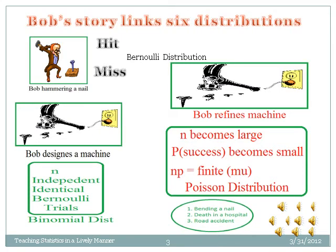In the case of the Poisson distribution, most of the time a bad event is considered as a success. For example: 1. Bending a nail is a success. 2. Death of a patient in a hospital is a success. 3. A road accident is a success. Etc.